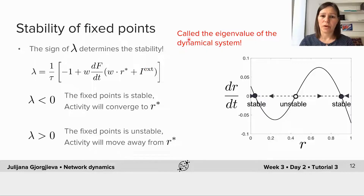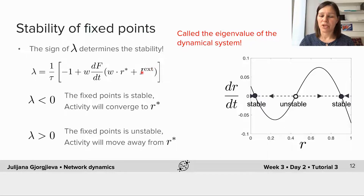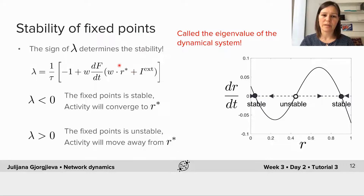This exponent lambda is called the eigenvalue of the dynamical system. Here, because we study a one-dimensional dynamical system with a single population of neurons, lambda is just a single number. This concept of eigenvalue to determine stability of fixed points also pertains to the second tutorial, where we study a two-dimensional dynamical system with networks of two populations of excitatory and inhibitory neurons. Let's investigate under which conditions lambda is positive or negative, which determines whether the fixed point is stable or unstable.